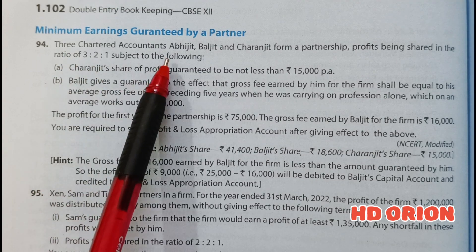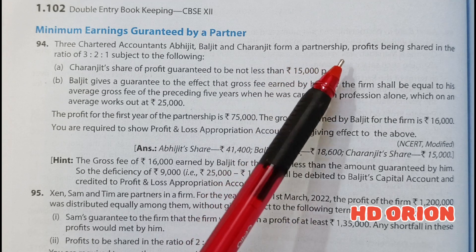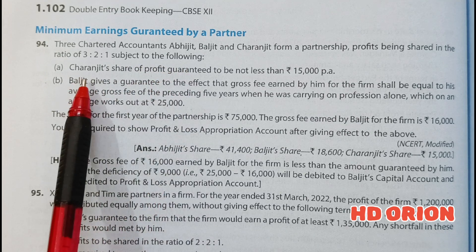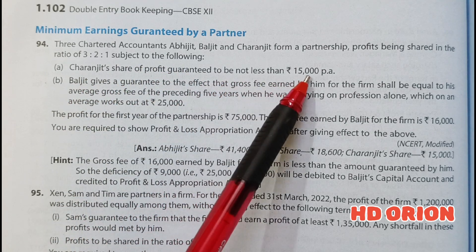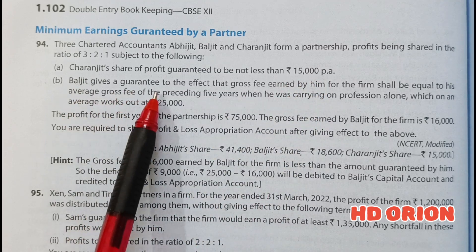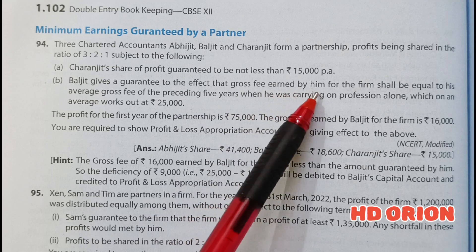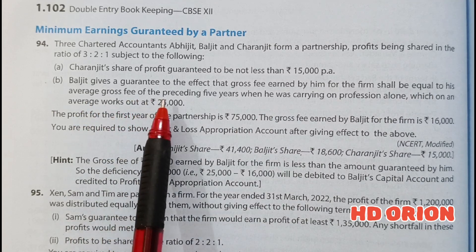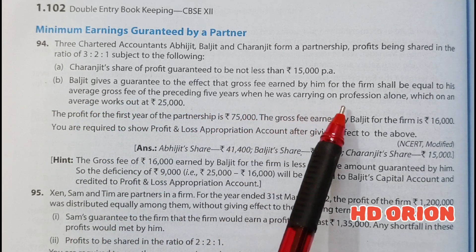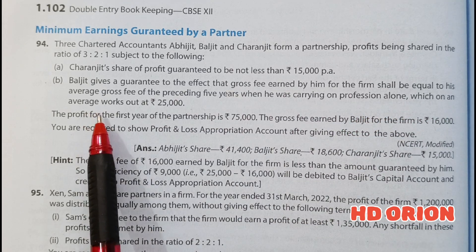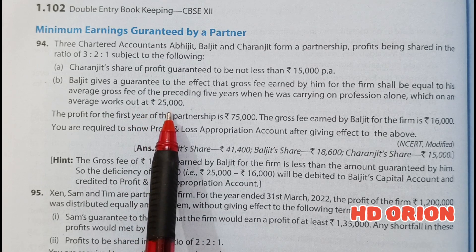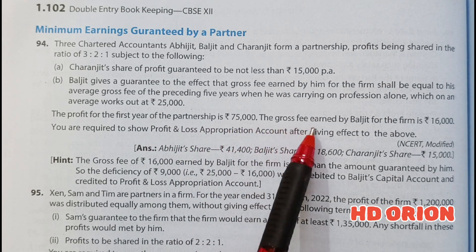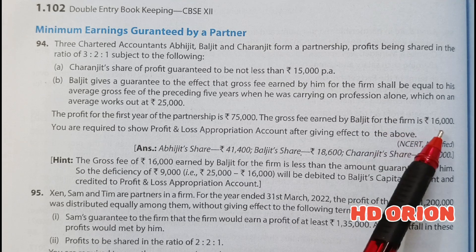Q94: Three Chartered Accountants, Abhijit, Baljit and Charanjit form a partnership, profits being shared in the ratio of 3:2:1 subject to the following: Charanjit's share of profit is guaranteed to be not less than Rs 15,000 per annum. Baljit gave a guarantee that the gross fee earned by him for the firm shall be equal to his average gross fee of the preceding 5 years when he was carrying on the profession alone, which on average works out at Rs 25,000. The profit for the first year of the partnership is Rs 75,000, and the gross fee earned by Baljit for the firm is Rs 16,000.